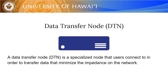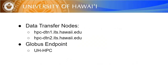Data transfer nodes are dedicated nodes for users to connect to for the sole purpose of transferring data. These nodes are optimized to offer the best performance for users transferring data. The Mana cluster currently has two data transfer nodes, or DTNs.